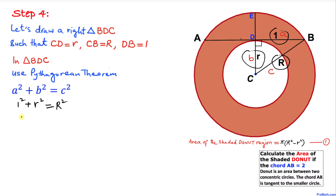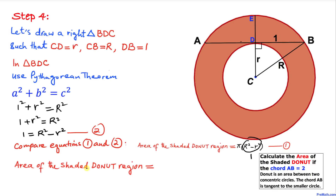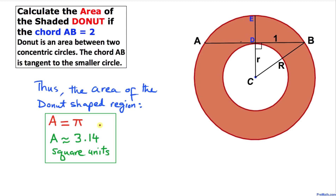Substituting: 1² + r² = R², which simplifies to 1 + r² = R². Moving lowercase r² to the other side gives 1 = R² − r². This is Equation 2. Comparing with Equation 1, the area of the shaded donut region equals π times (R² − r²) = π times 1 = π. The area is π, approximately 3.14 square units.